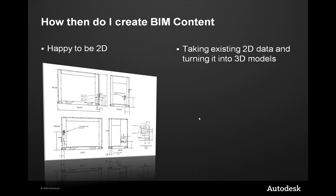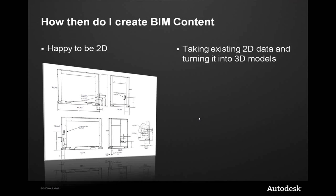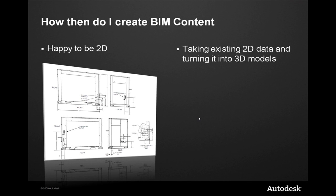So how do I go about creating BIM content if I am happy to be 2D? The first thing you're going to do is take existing 2D data and turn it into 3D models. People are asking for 3D BIM content — what's the quickest path? You need to concern yourself with level of detail. You probably don't need to model all those holes and flanges. You really just want an overall general footprint and then appropriate connection points.